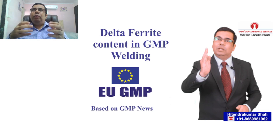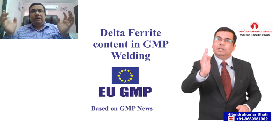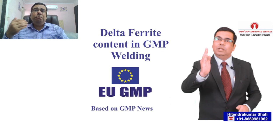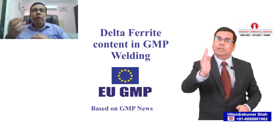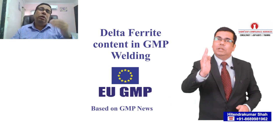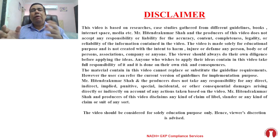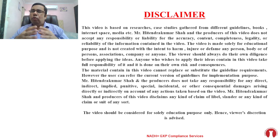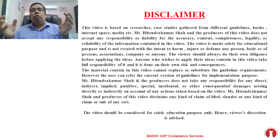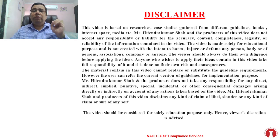As you know, we are continuously using SS316 and SS316L as material of construction for all GMP manufacturing processes. Stainless steel is an alloy. How can we further control contamination or cross-contamination through SS316 by controlling the delta ferrite content during welding of SS316? That is today's topic. The material I'm sharing is taken from different literature sources and GMP information sources — this is purely for your learning purpose.